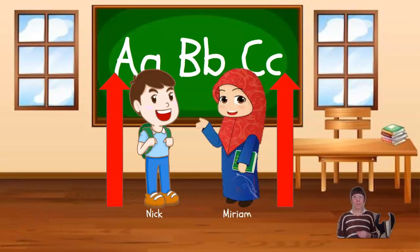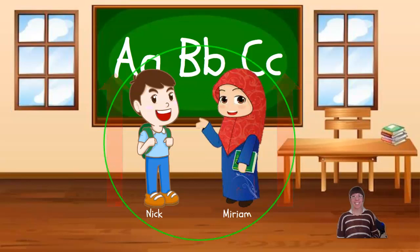Very good. These two distances are the same. That means that Nick and Miriam are the same height. Neither one of them is shorter because they are the same.